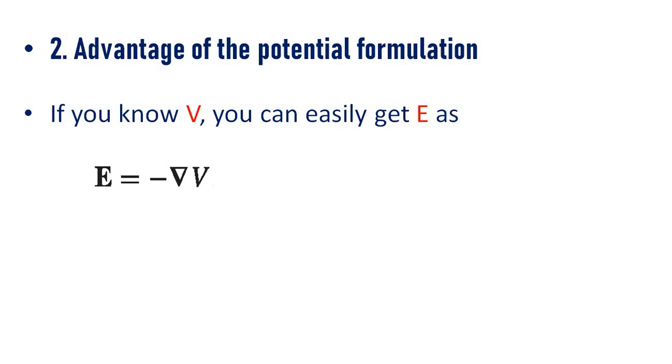Advantage of the potential formulation. If we know V, we can easily found E as E equal to minus grad V. Electric field is the negative gradient of potential.